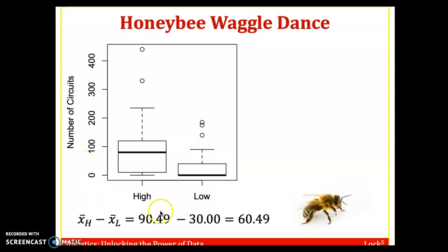All right, the raw data says the average number of circuits for the high was 90 and a half. The average for the low was about 30. And the difference between these two is about 60.49.